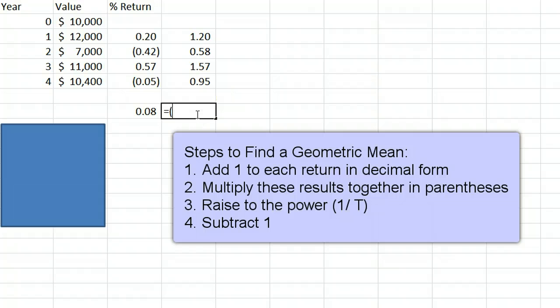Then multiply all these values together in parentheses, and we're going to raise this to an exponent, which is the caret or shift 6 in Excel. The exponent will be 1 over the number of years, which in this case is 4, that goes in parentheses as well.